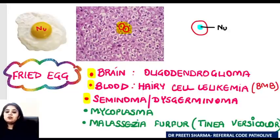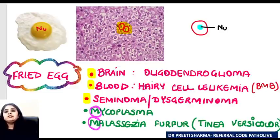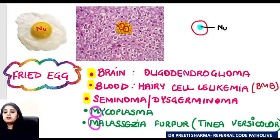In microbiology, there are two 'M' colonies which show fried egg appearance: the colonies of Mycoplasma and the colonies of Malassezia furfur, which is a fungal organism. So Mycoplasma and Malassezia — these two M's — show fried egg colonies.